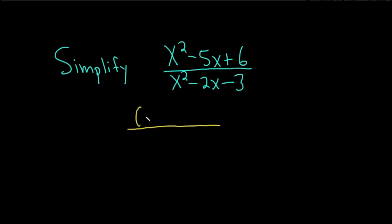Let's try to factor it like this: x times x. We need two numbers that multiply to 6 and add to negative 5. Well, 2 times 3 equals 6, but if you add them you get 5.